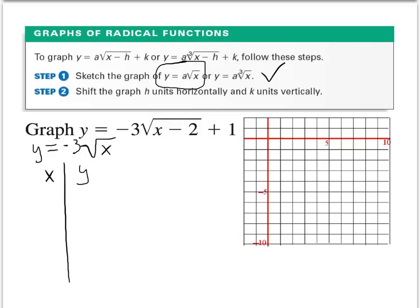We create an x and y table, and once again I use numbers whose square roots are easy to find: 0, 1, 4, and 9. The square root of 0 is 0, times negative 3 gives 0. The square root of 1 is 1, times negative 3 gives negative 3. The square root of 4 is 2, times negative 3 gives negative 6. The square root of 9 is 3, times negative 3 gives negative 9.